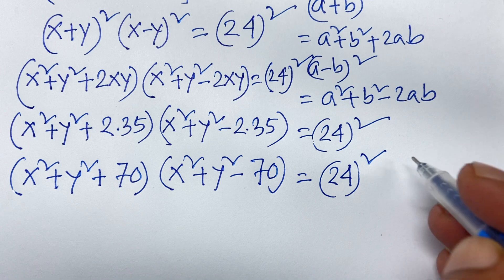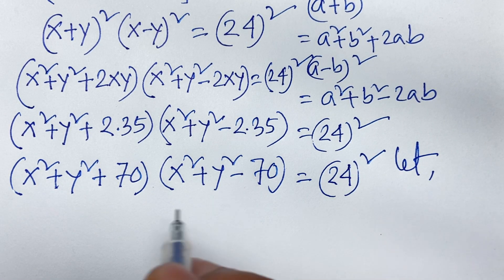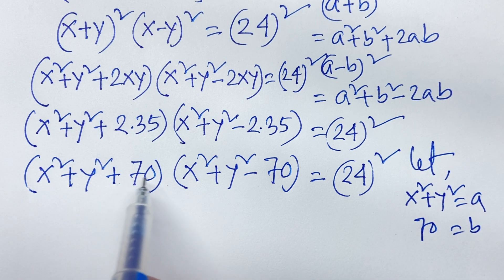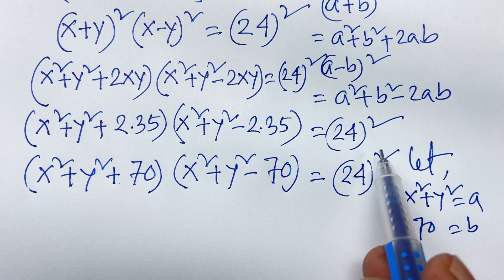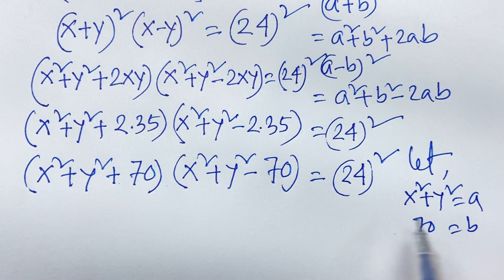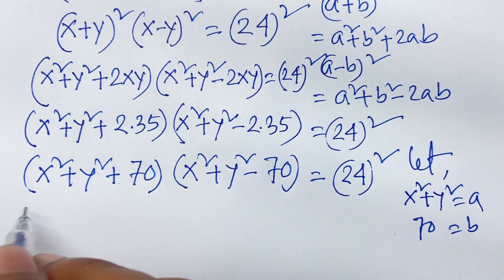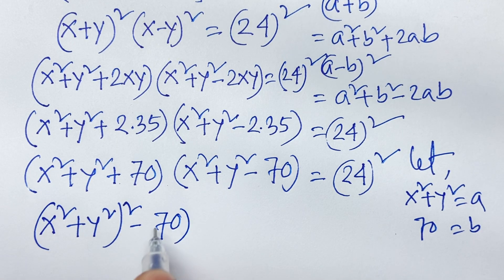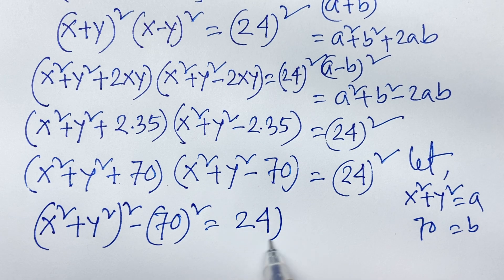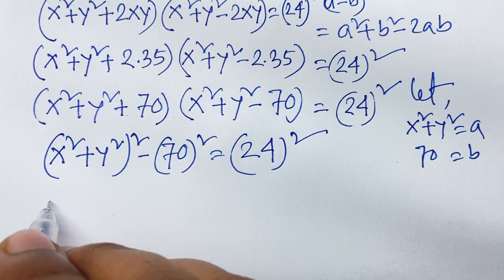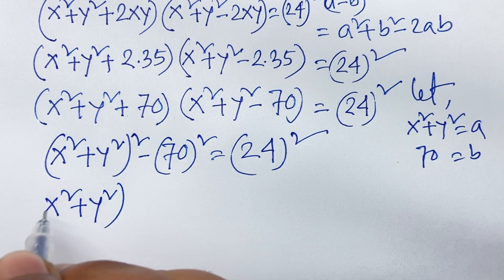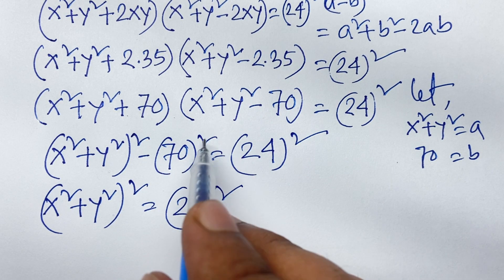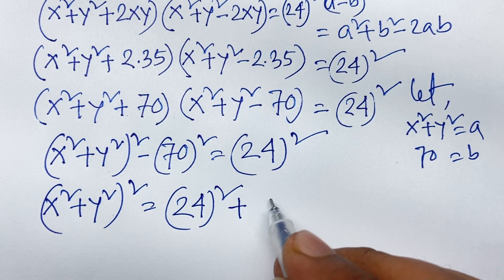Now, let x squared plus y squared equal a and 70 equal b. Then we have (a plus b)(a minus b) equals 24 squared. We know that (a plus b)(a minus b) equals a squared minus b squared, so (x squared plus y squared) whole square minus 70 squared equals 576. Moving the 70 squared to the right side, we get (x squared plus y squared) whole square equals 576 plus 70 squared.